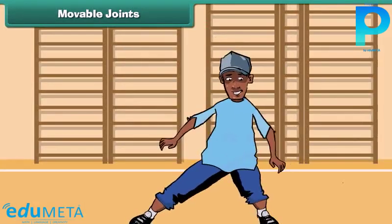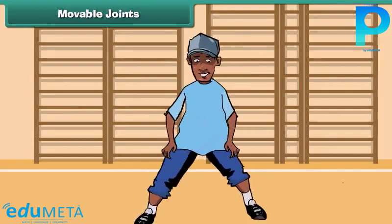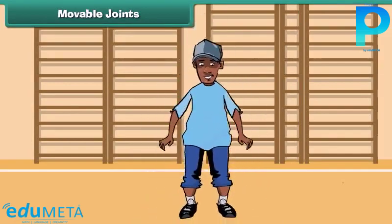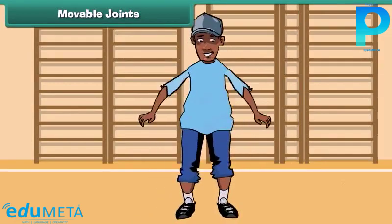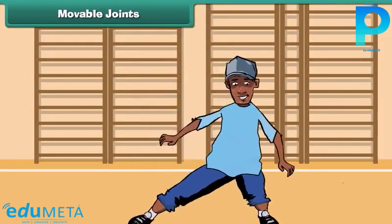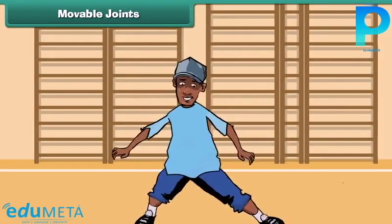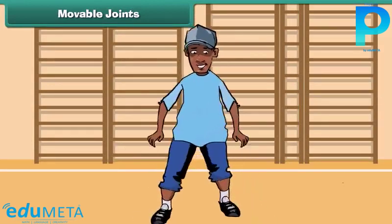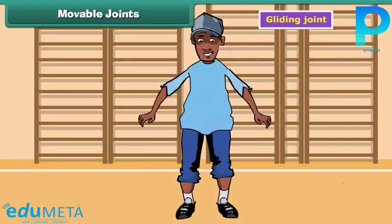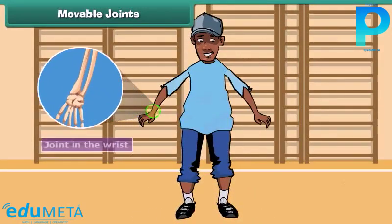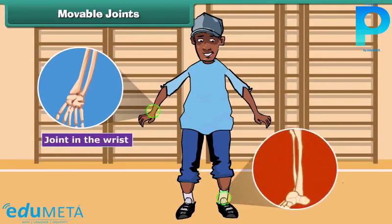Friends, have you ever noticed that we can move our hands and our feet in different ways? The joints which allow such movements are called gliding joints. Joints in the wrist and the ankle are examples of these joints.